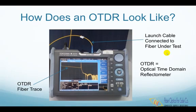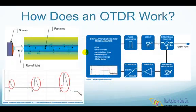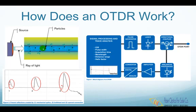An OTDR provides a view of the fiber link by reading the level of light that is reflected back from the fiber under test. There are actually two types of light being reflected back. The first type is a constant low-level reflection created by the fiber called Rayleigh backscattering. Rayleigh backscattering comes from the natural reflection and absorption of impurities inside optical fiber.